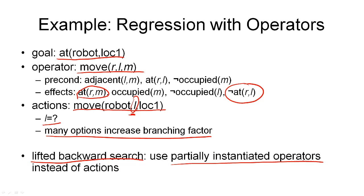Lifted backward search can also deal with partially instantiated operators where not all the parameters of the operators are replaced by actual values. This does reduce the branching factor, but unfortunately it also makes the algorithm a lot more complicated. Keeping variables in a plan is an example of what is sometimes called least commitment planning, where we try to make as few commitments as possible during the planning process unless we have a good reason for making a specific commitment. We will see a lot more of this type of planning next week.